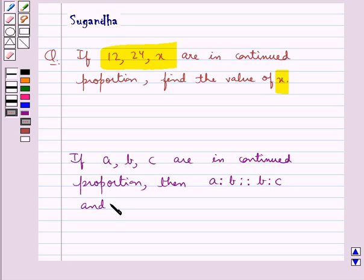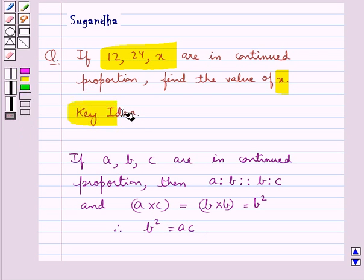The product of extremes, that is a multiplied by c, is equal to the product of means, which is b multiplied by b, equal to b squared. That is, b squared equals ac. This is the key idea for this question.